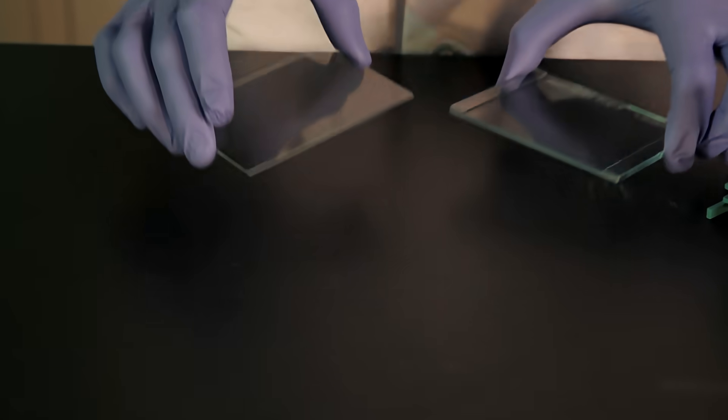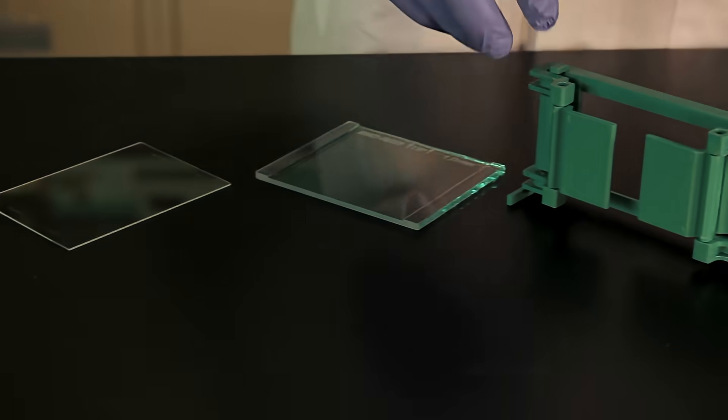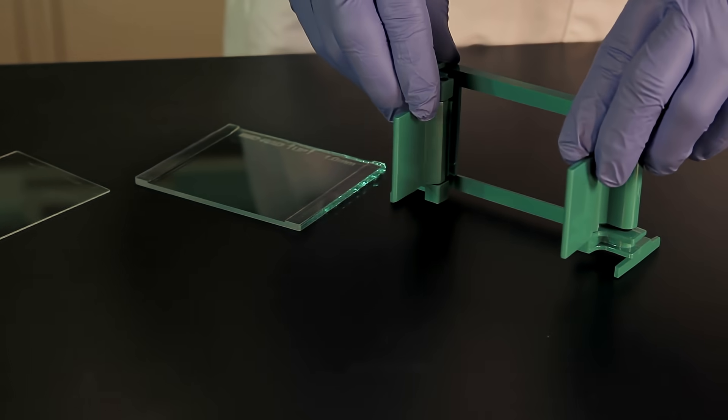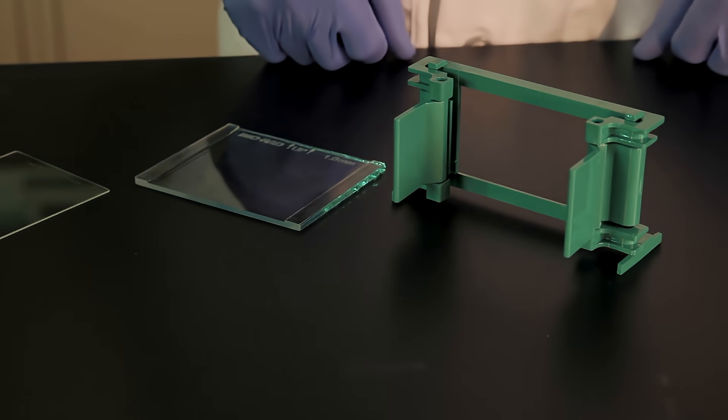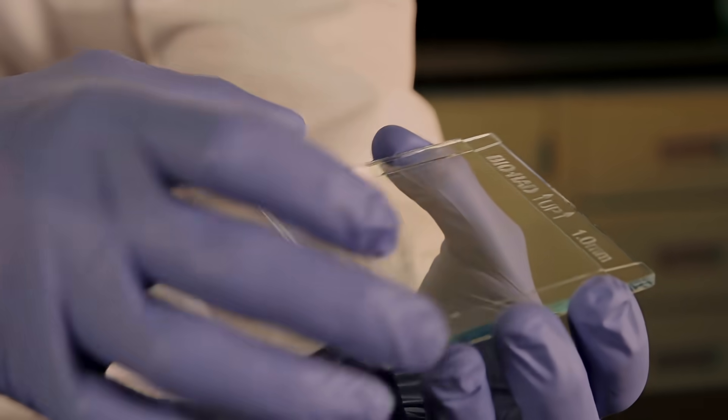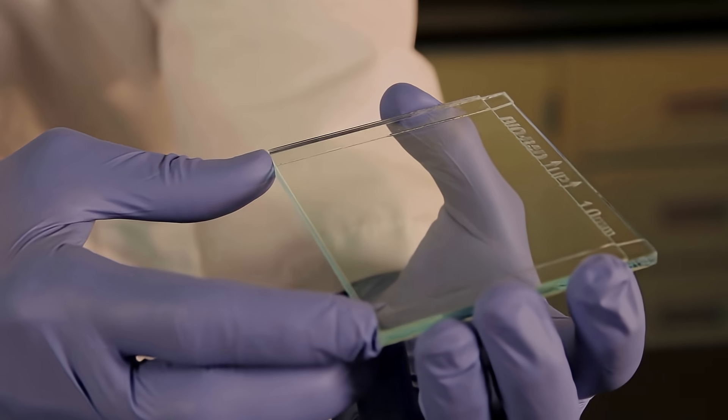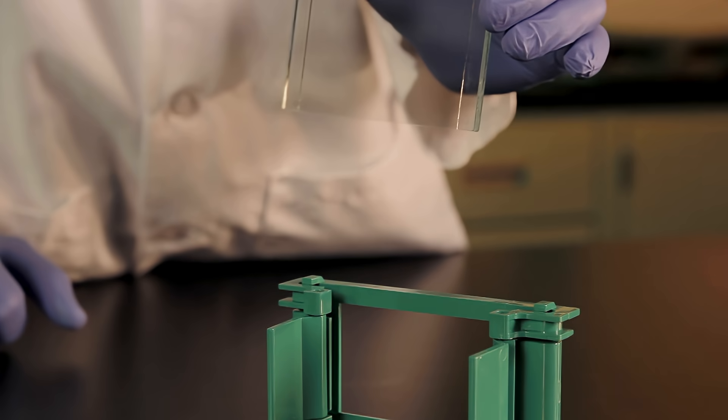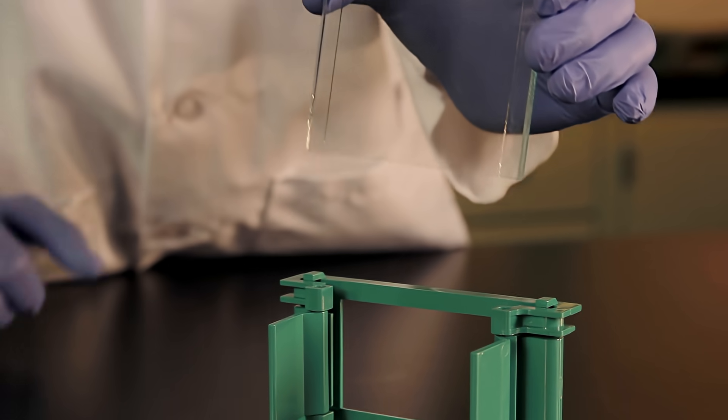Take care to ensure that all glass plates are clean and dry. Place the casting frame upright on a flat surface with the pressure cams in the open position. Select a spacer plate of the desired gel thickness and place a short plate on top. Slide the two glass plates into the casting frame.